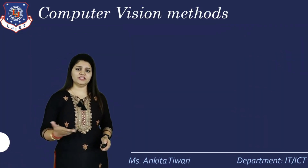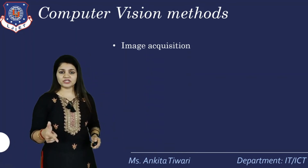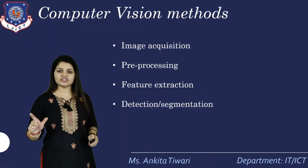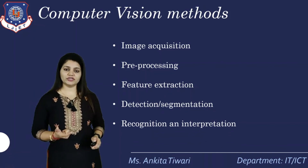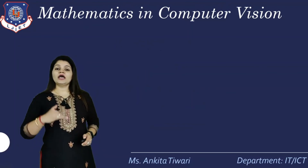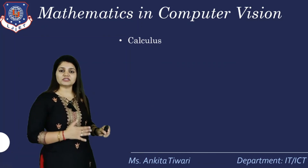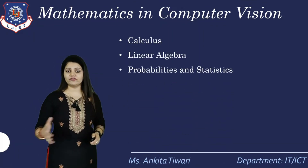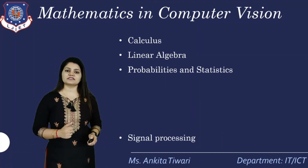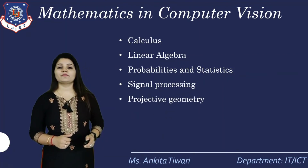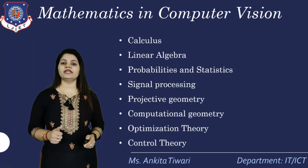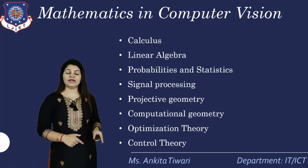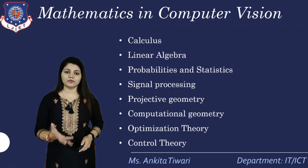Now the different computer vision methods are: image acquisition — I have already told you about image acquiring — then pre-processing, then feature extraction where different parts of the image are analyzed separately in order to get the features, detection which is also known as segmentation, also recognition and interpretation — interpreting the data. The different mathematical concepts that we are going to learn include: calculus, linear algebra, probability and statistics which you have already learned last semester, signal processing which you have already learned in networks, projective geometry, computational geometry, optimization theory, and control theory — which you are going to learn as new concepts in the computer vision subject.